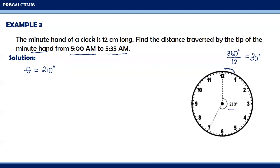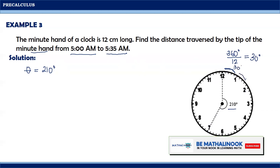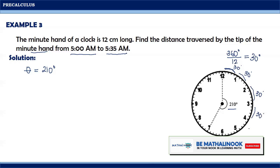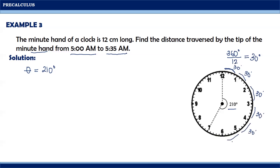It traveled 7 parts of the clock. So, 30 degrees, another 30 degrees, another 30 degrees, 30 degrees, another 30 degrees, and finally another 30 degrees sum up to 210 degrees.